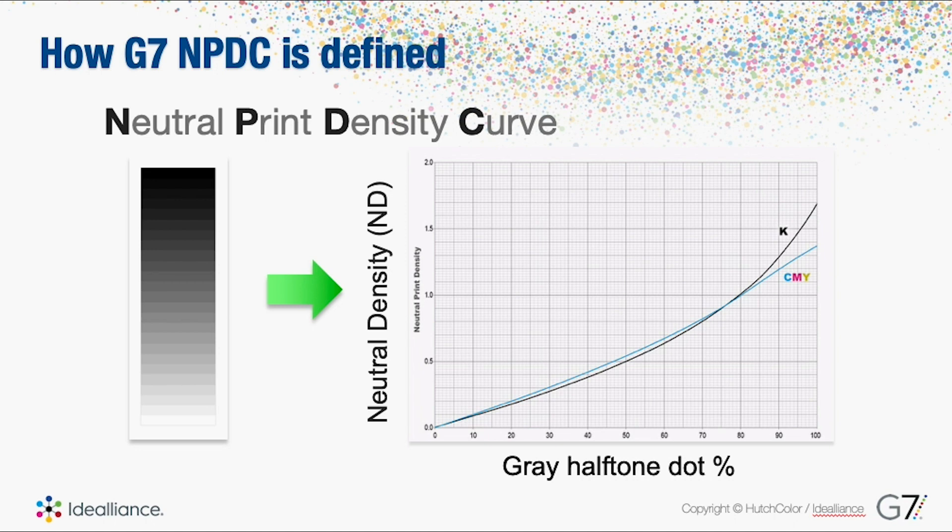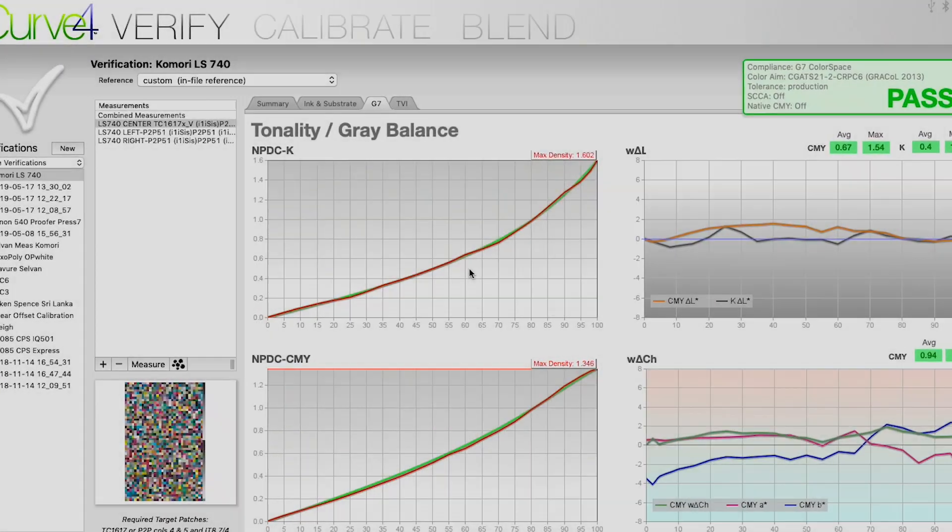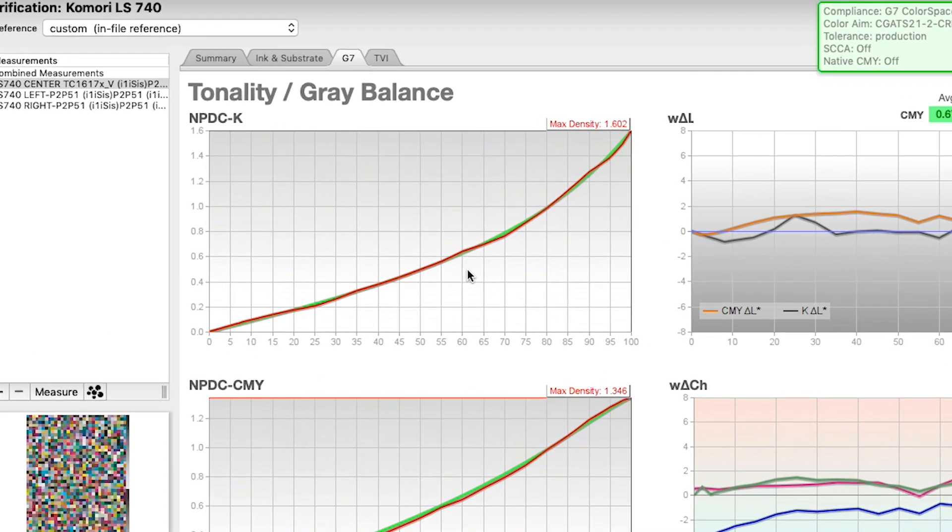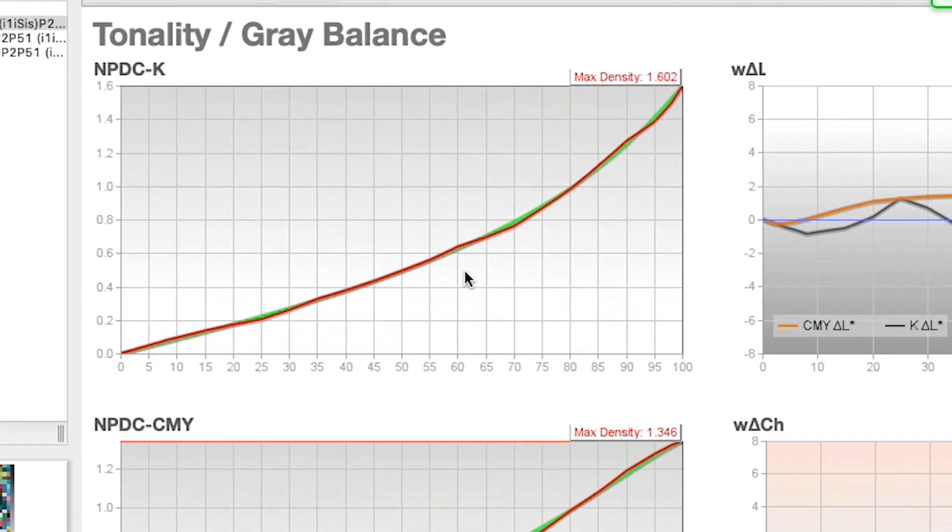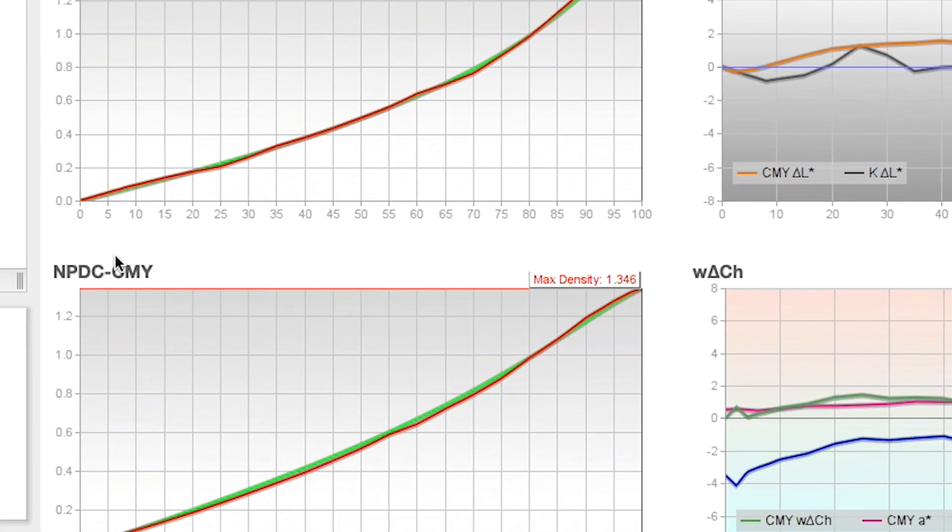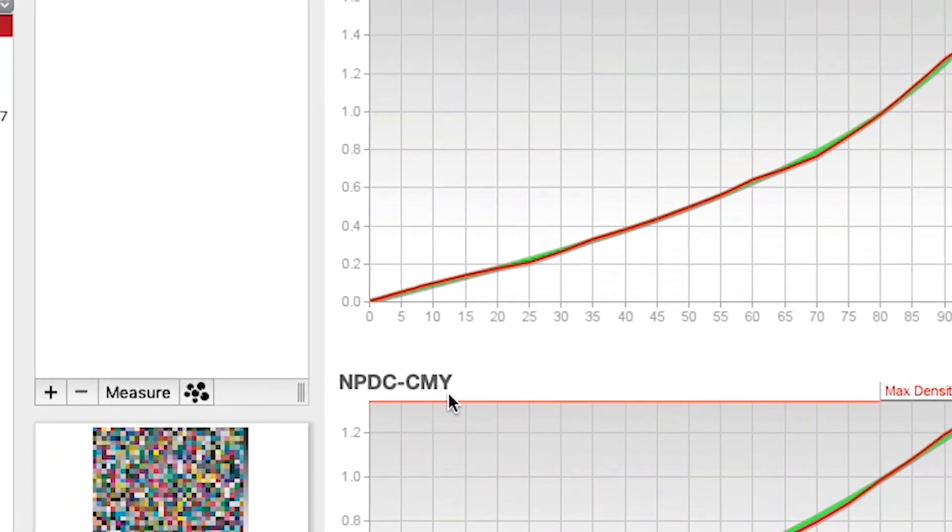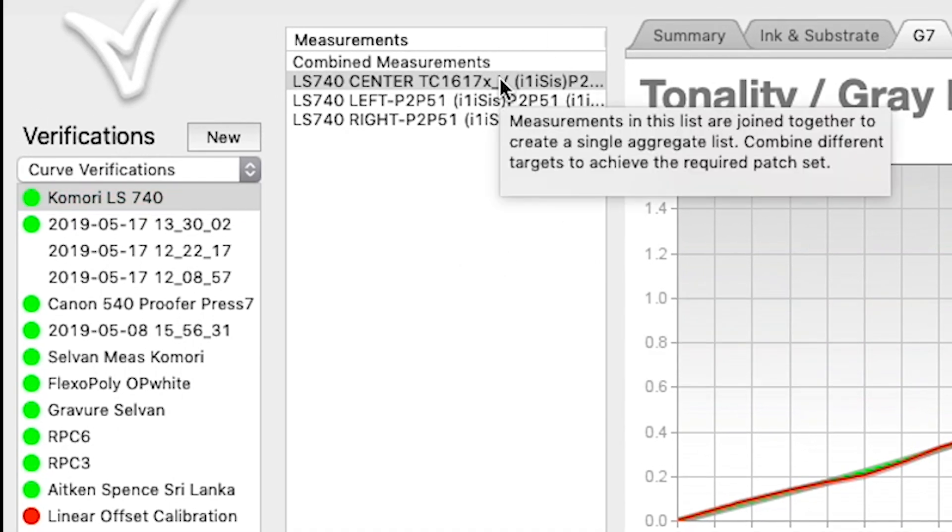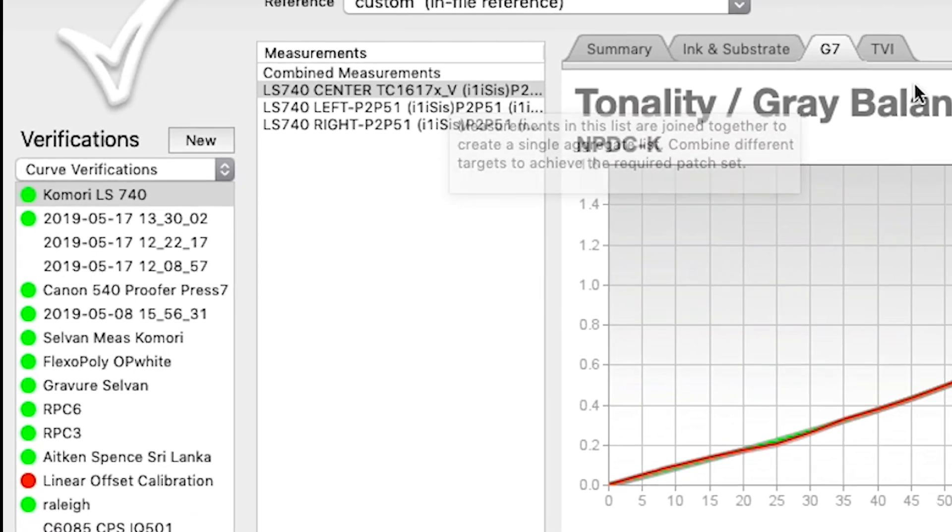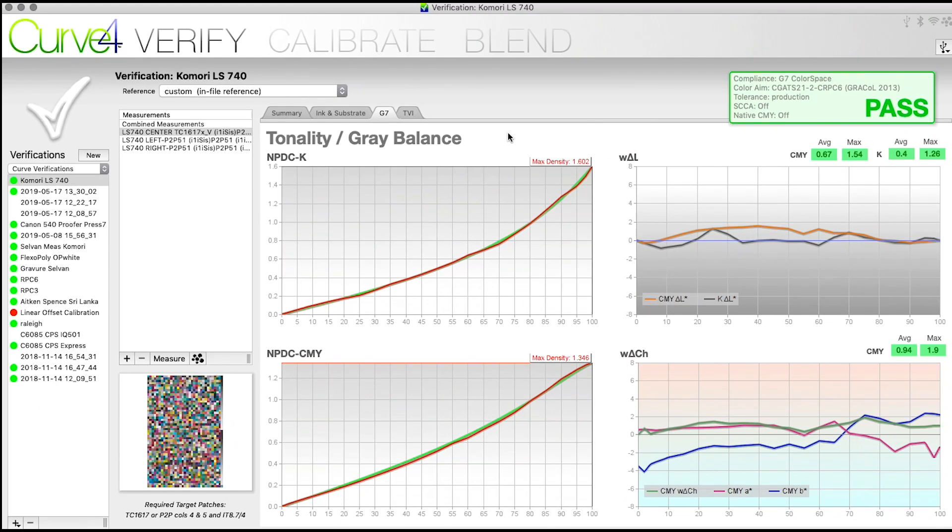Let's take a look at NPDC in a software solution called Curve4. The neutral print density curve that we're looking at here on the top is for your black, and then you have the graph here below, NPDC CMY. This is a Komori Lithrone offset press and I've run a target, a couple TC1617s and two P2P51s, imported them in to see what the results for tonality and gray balance are.